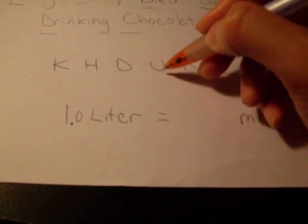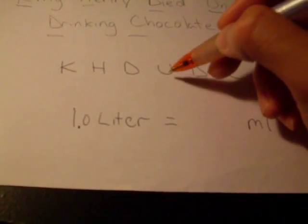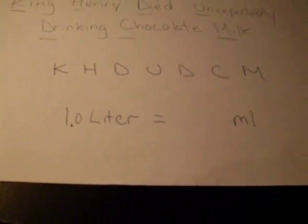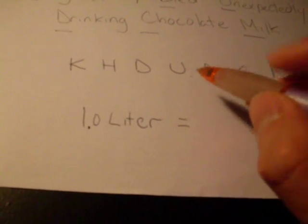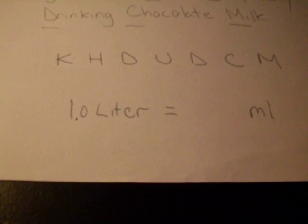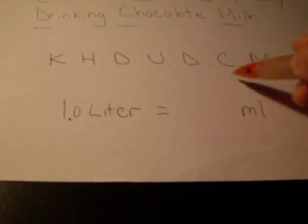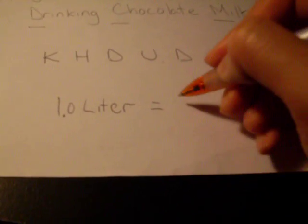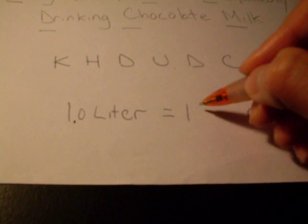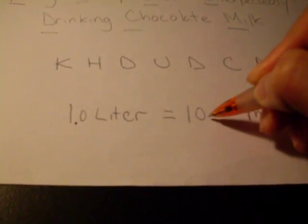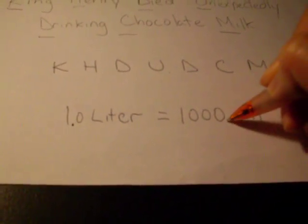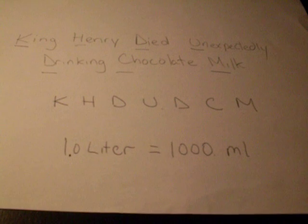Since liter is a unit, we can put a decimal point in front of the U. How many spots do you have to move it over before it's in front of the milliliter? 1, 2, 3. So we move our decimal point over three spots, and that gives us 1,000 milliliters.